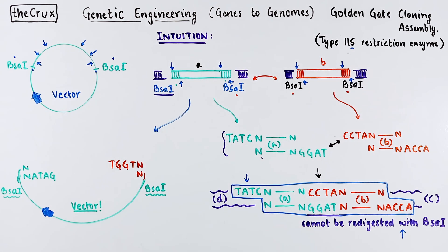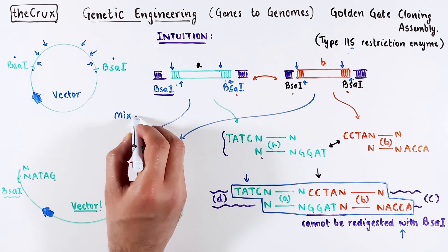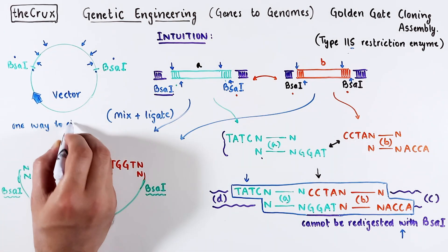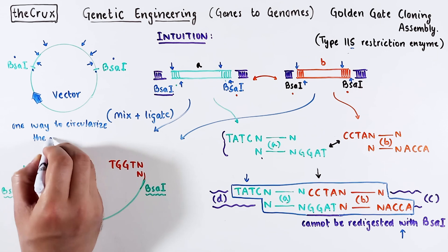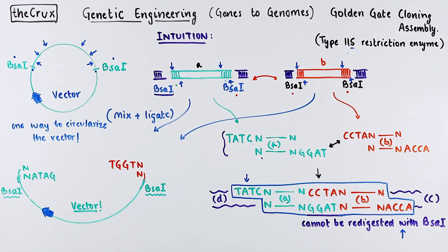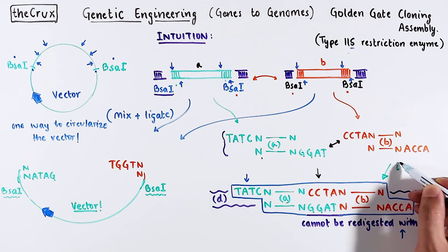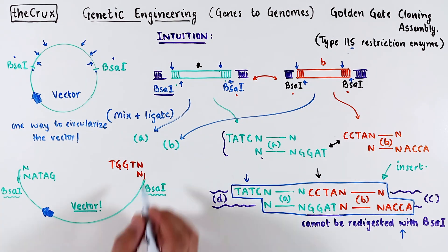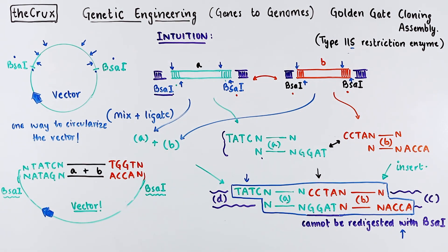Now to clone A and B fragments, you just take the digested products of A and B and mix it in specific molar ratios with the digested vector. Given our design, there is only one direction and one way to circularize and create a final vector. That is if the insert is established between the vector. And the final product looks like this.